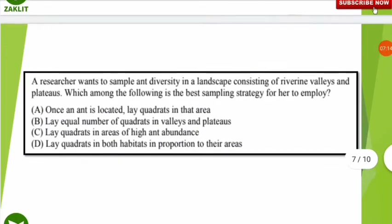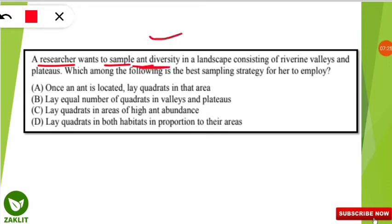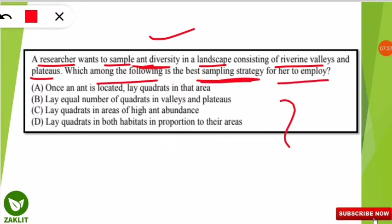The next question involves sampling. A researcher wants to sample ant diversity in a landscape that has rivers and valleys along with plateaus. Which of the following is the best sampling strategy for her to employ for ant sampling in this area?